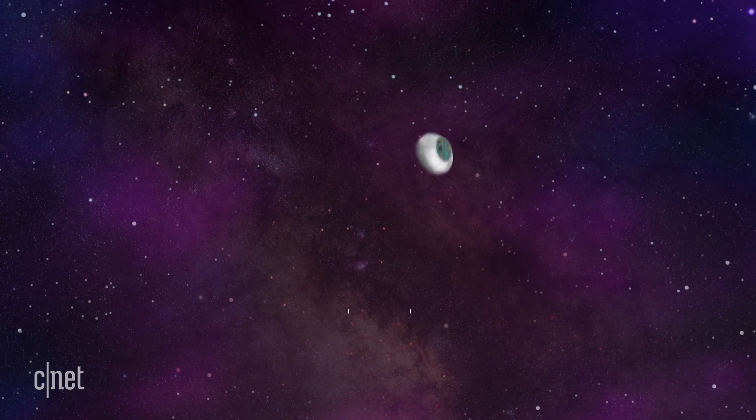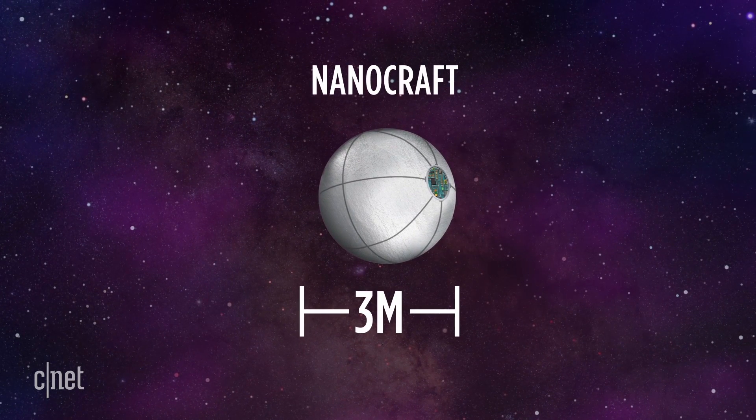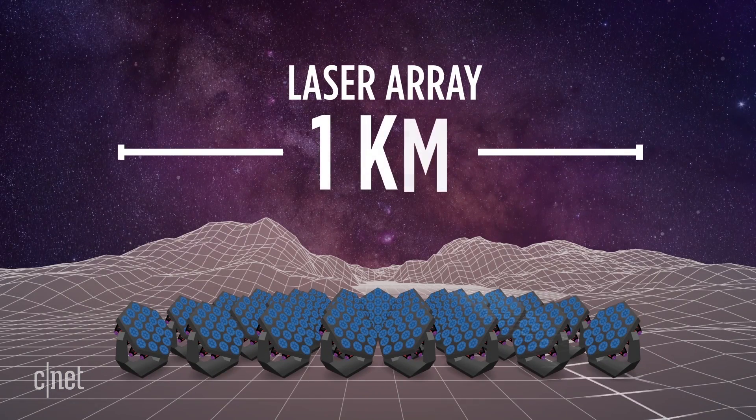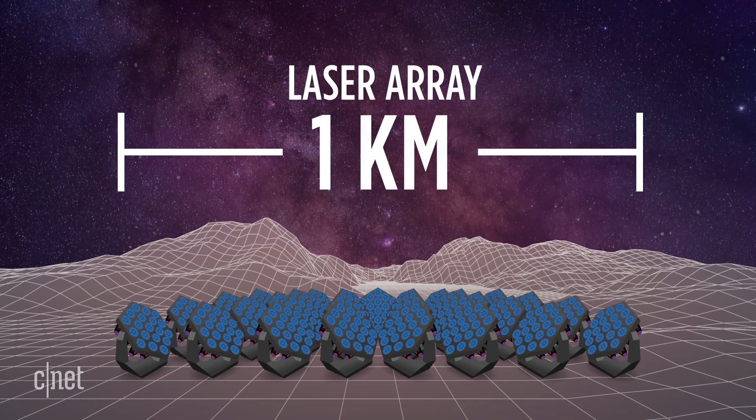Once outside the mothership, the nanocraft will inflate a spherical sail. Next, an Earth-based laser array will fire a tremendously powerful light beam at the spacecraft.